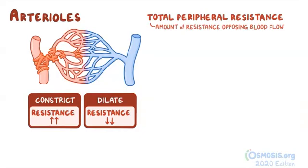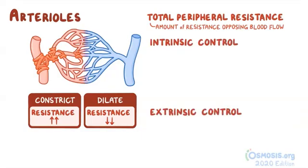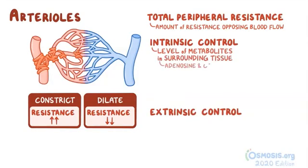Additionally, there are two mechanisms that help them do their job, intrinsic and extrinsic control. Intrinsic control of blood flow is based on the level of metabolites in the surrounding tissue. For example, adenosine and carbon dioxide will cause nearby arterioles to dilate. Another type of intrinsic control is autoregulation, and it's when the flow of blood is kept steady against changing arterial pressure.